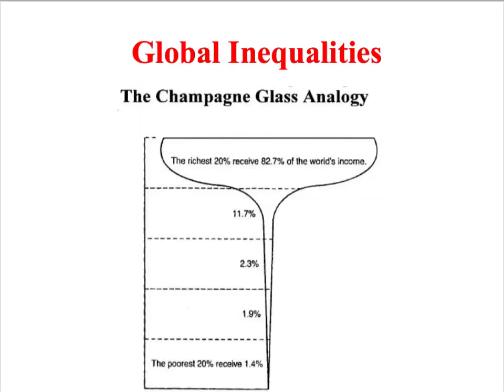In sociology, we use the term global inequalities to describe the uneven distribution of things like wealth, income, and opportunities around the world. One simple way to illustrate just how wide these inequalities are is through the champagne glass analogy. The richest 20% of the world's population have close to 83% of the world's income, whereas the poorest 20% are getting less than 1.5% of the world's income.